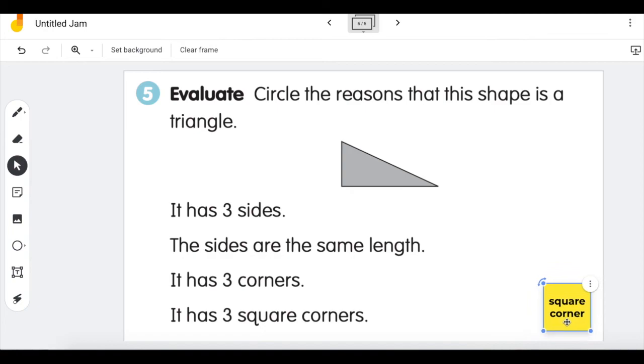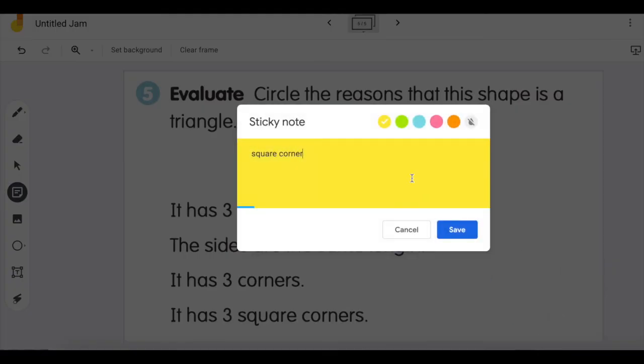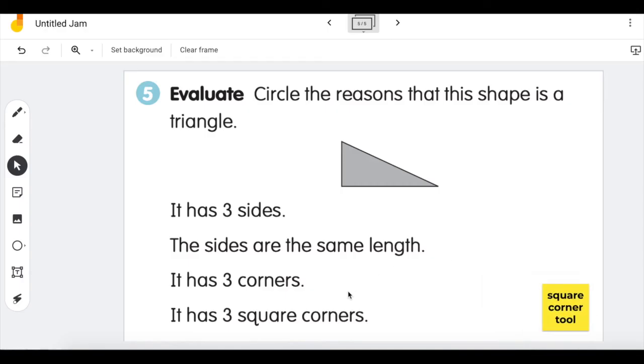Let's call it the square corner tool. So do all triangles have to have three square corners? If it's true and they do you'll circle this and if it's not true, triangles can have square corners but they don't have to, then we will leave it alone.